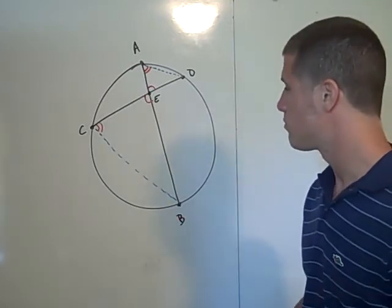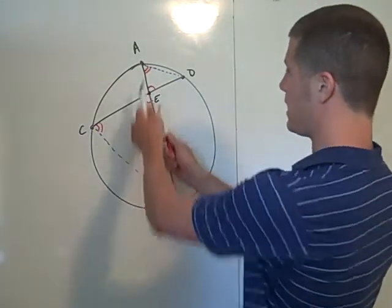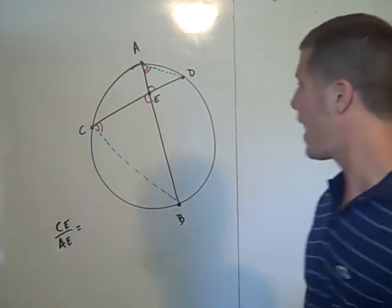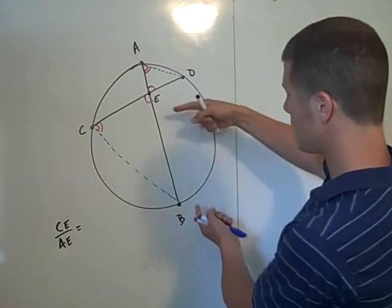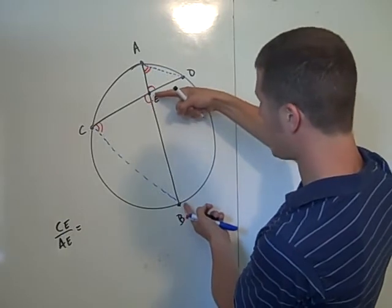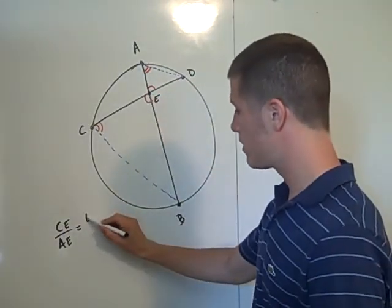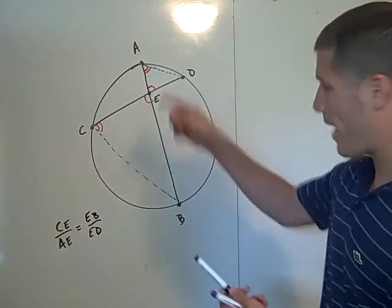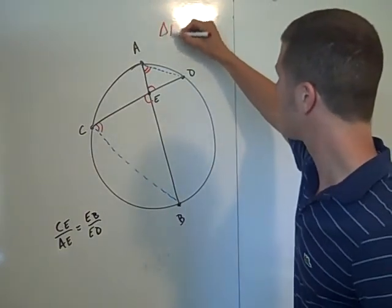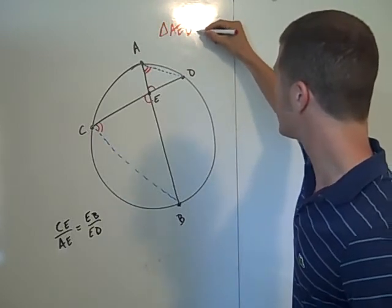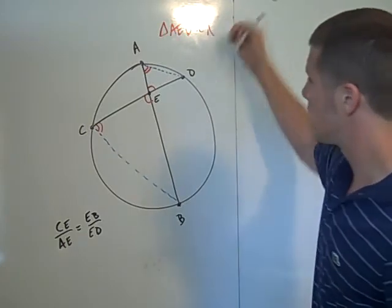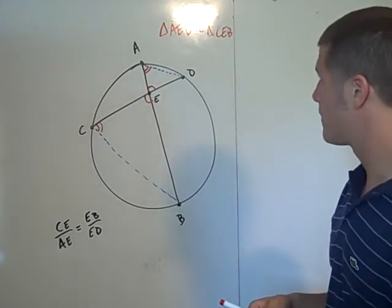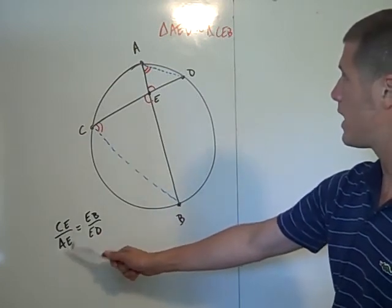Which means we can write a proportion. We can say that CE is to AE as EB is to ED. I know that because I just showed that triangle AED is similar to triangle CEB. So CE is to AE as EB is to ED.